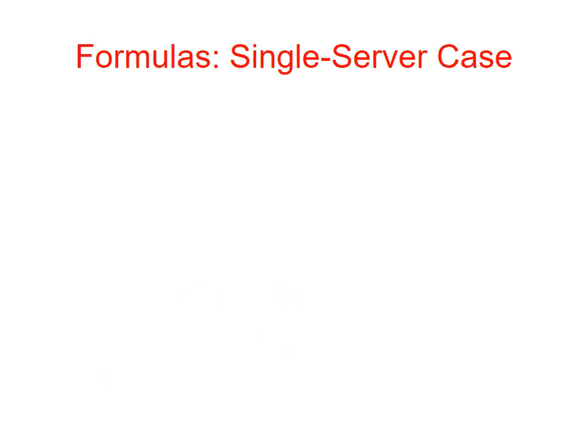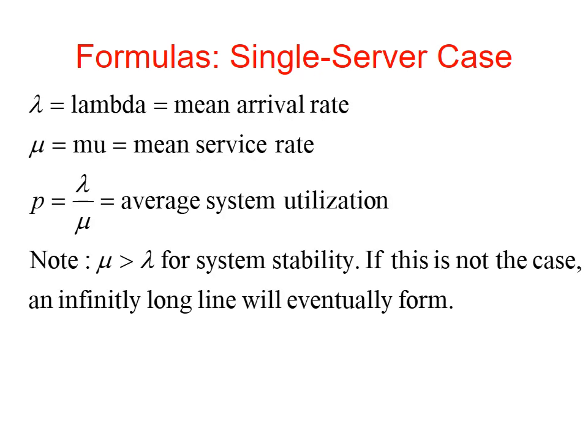Formulae — single server case. Lambda means arrival rate, mu means service rate, B means utilization. Average system utilization equals lambda over mu. Note: mu must be bigger than lambda for system stability. If this is not the case, an infinitely long line will eventually form.